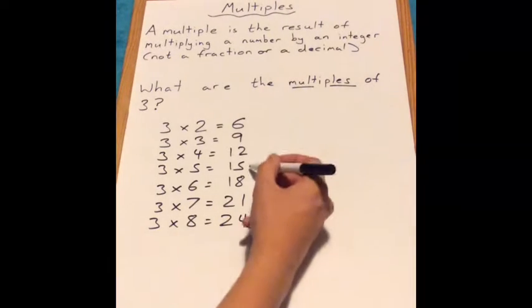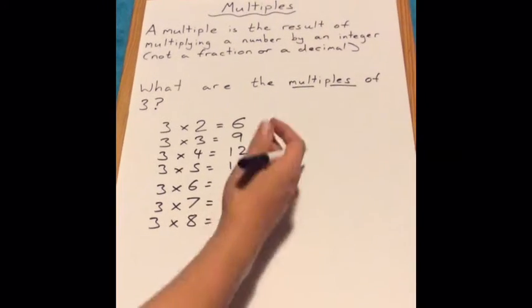So there we go. 6, 9, 12, 15, 18, 21, 24 are all multiples of 3.